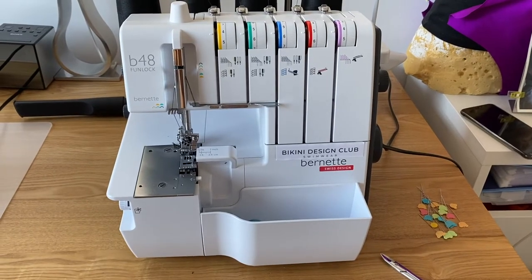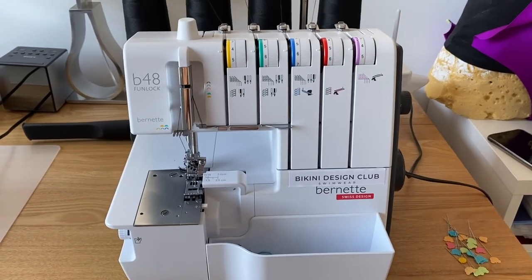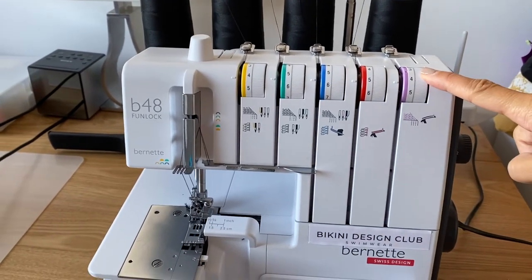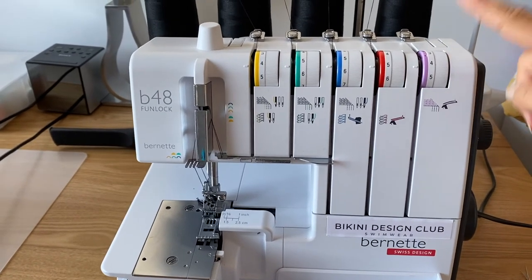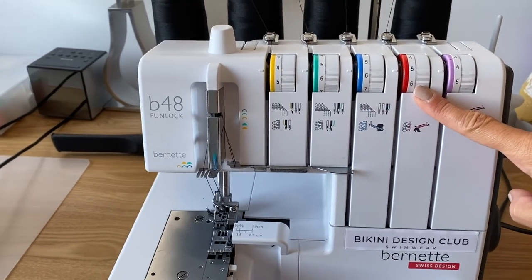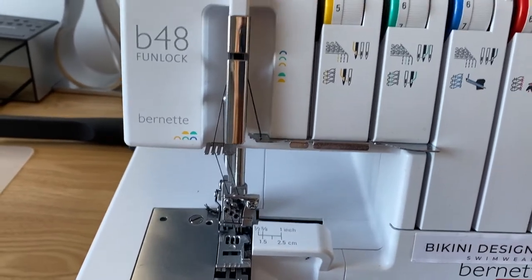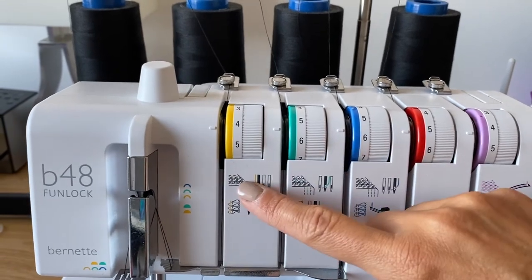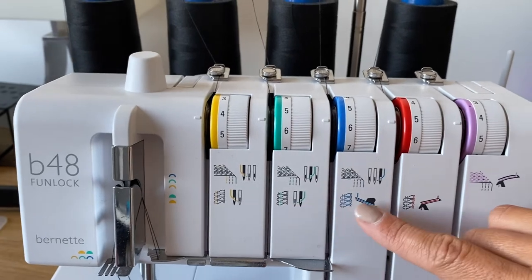So this is my overlock. It's a Bernette B48. It has a cover stitch here, which I never use, I know I should, but I never use it. So I have the cover stitch and I also have my overlock stitches. I have the two needles over there. This is a very good machine because you can regulate lots of things. This is how I have my threads, the tension of my different threads: my left needle, my right needle, and then both underneath the stitch.